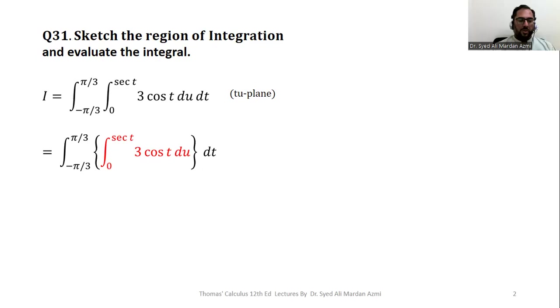With respect to u, 3 cos(t) is constant, so we can take it outside, and the integration of du will be u. In the next step we will apply limits with the help of the fundamental theorem of calculus: upper limit minus lower limit.